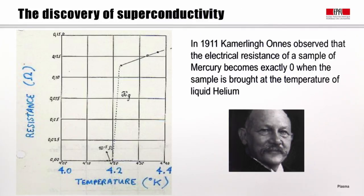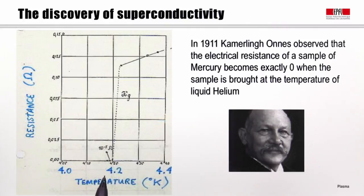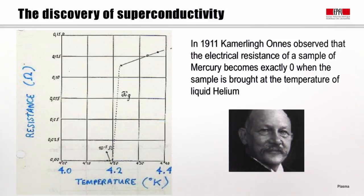Superconductivity was discovered in 1911 by Kamerlingh Onnes, who observed that the electrical resistance of a sample of mercury became not just small, but exactly zero when the sample was brought to the temperature of liquid helium. This is the original plot he produced — below 4.2 degrees Kelvin, the resistance is identically equal to zero. That opened the field of superconductivity.